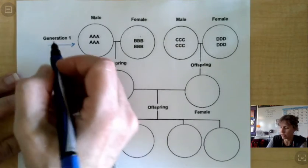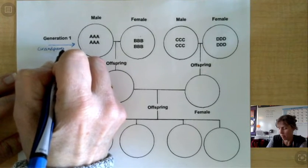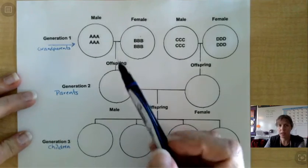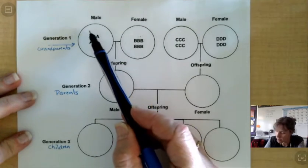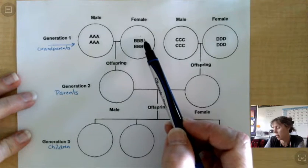So we're going to start at the first generation with the grandparents. And we're going to say that the grandparents, the Grandpa has all As, the Female, which is the Grandma, has all traits that are Bs.